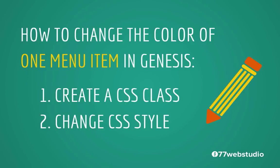To change the color of one menu item in your Genesis Child Theme, it's a two-step process. Step number one, we need to create a CSS class for that unique menu item. Step number two, we need to change the CSS styles of the CSS class that we just created. So let's take care of step number one, which is creating the new CSS class for our menu item.